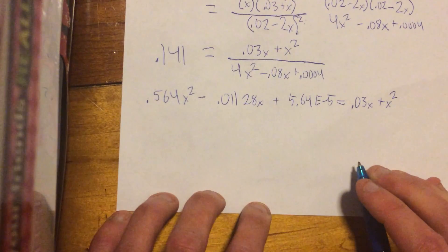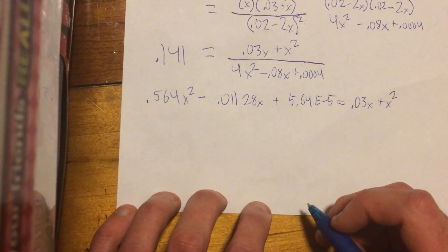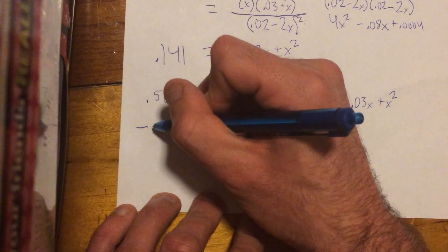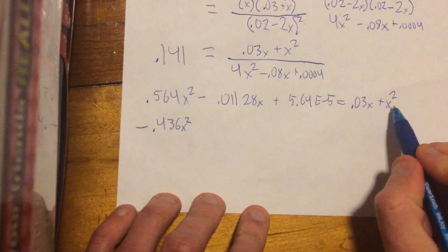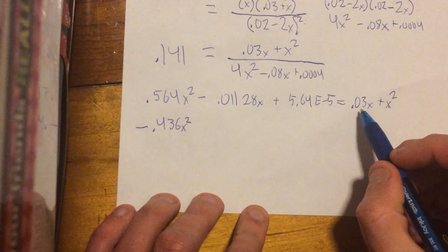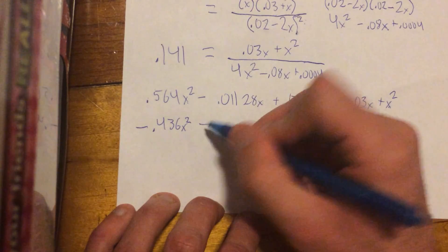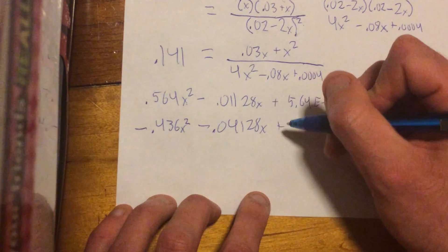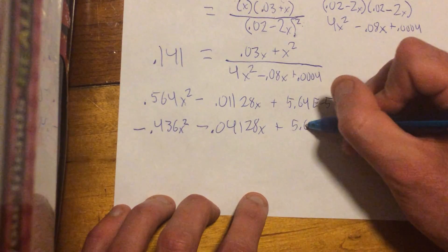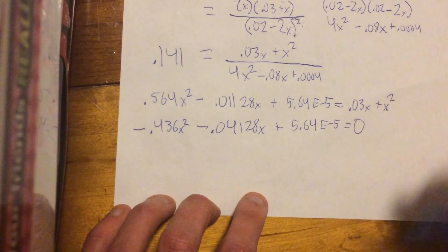All right, next, we will subtract these, or add these, or subtract them over to here, and that gives us a negative 0.36x squared, because we subtracted the x squared, and then we're going to subtract off the 0.03x, so that comes out to 0.04128x plus, we still have 5.64 times 10 to the negative 5, equals 0.